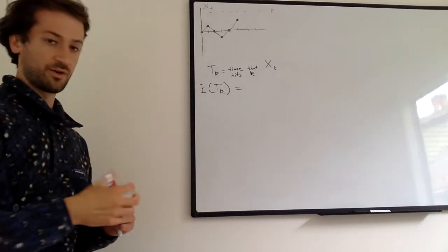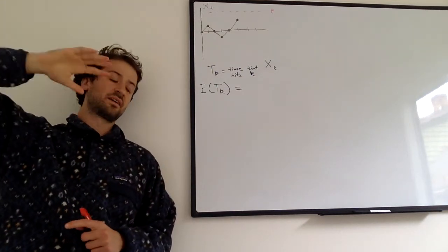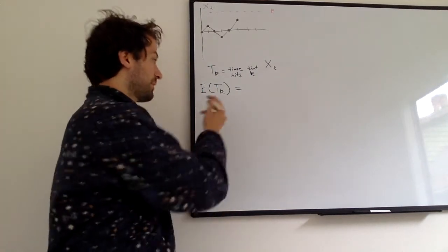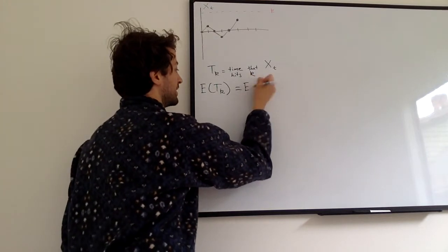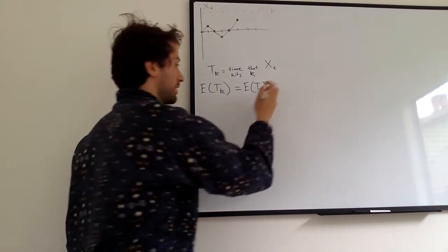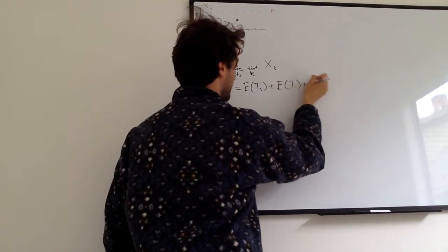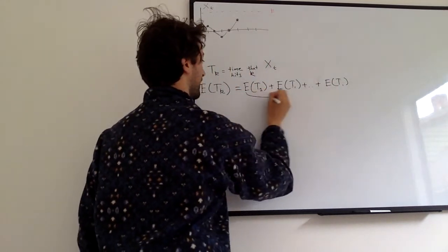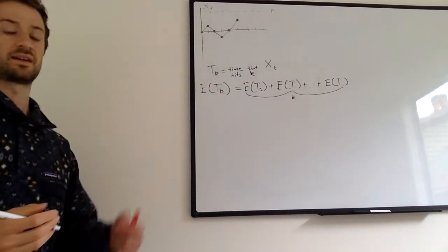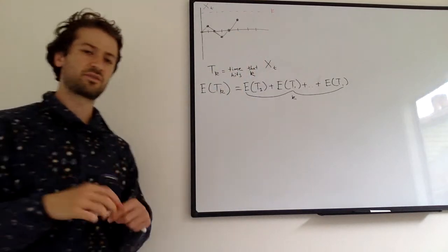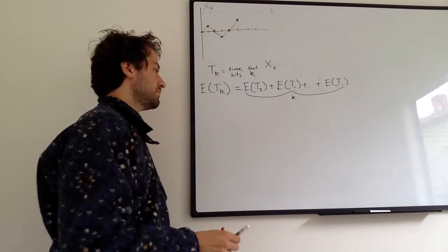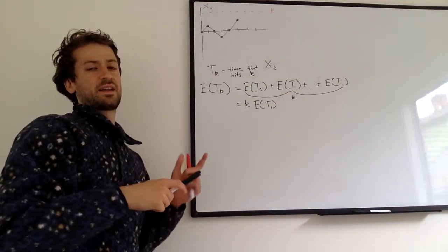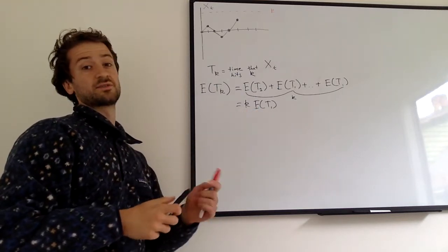Similar to the previous video, we can think of getting up to level k as getting to level one a bunch of times. So to get to step five, we basically have to get to step one, and we have to do that five times. So we can break out E[T_k] as E[T_1] + E[T_1] + ... + E[T_1], with k of these terms, since the intervals are independent. Simplifying, that's k·E[T_1]. And what's really nice is that E[T_1] is way easier to find than E[T_k].